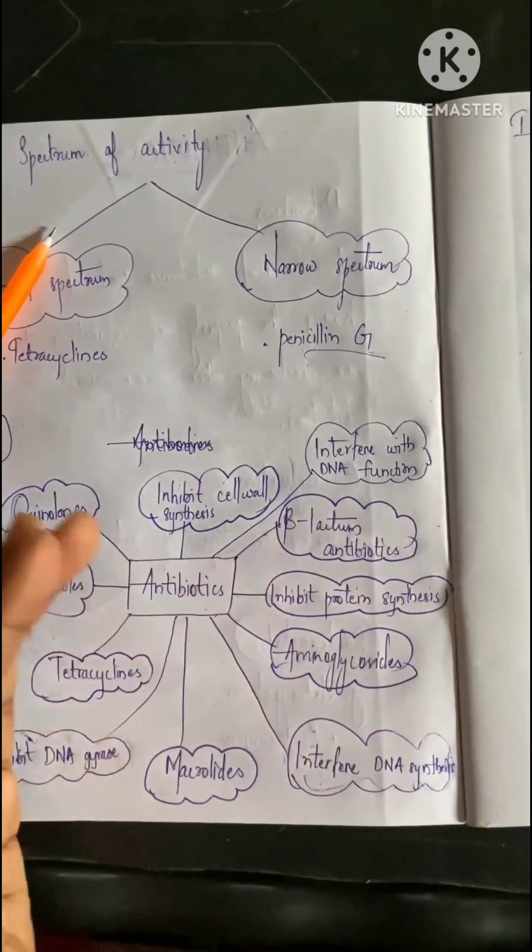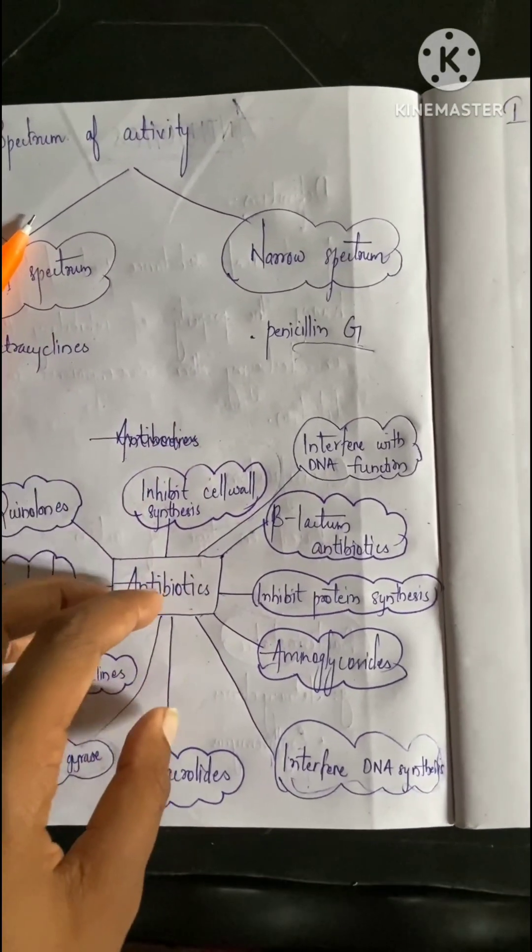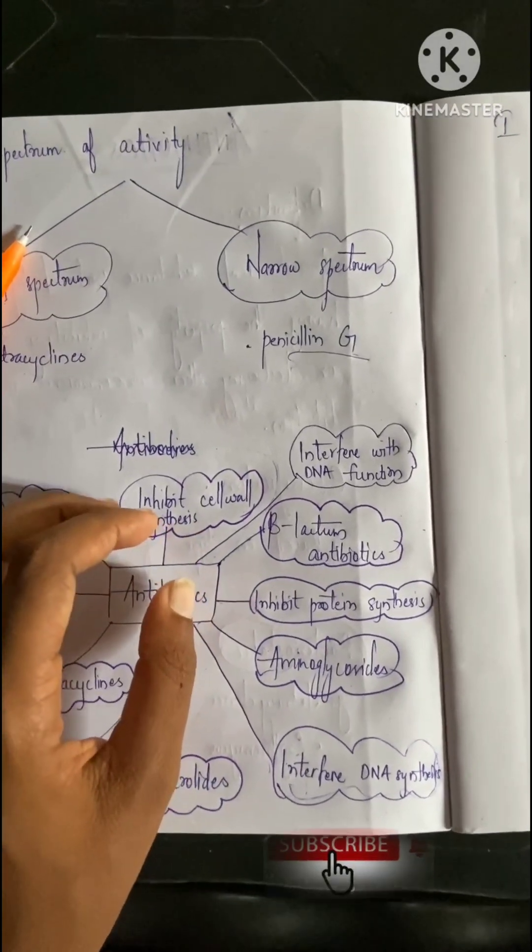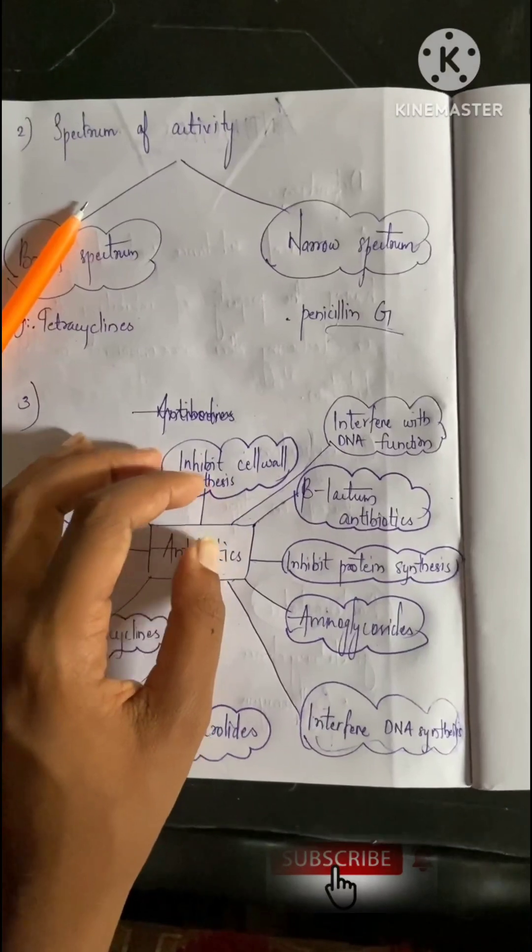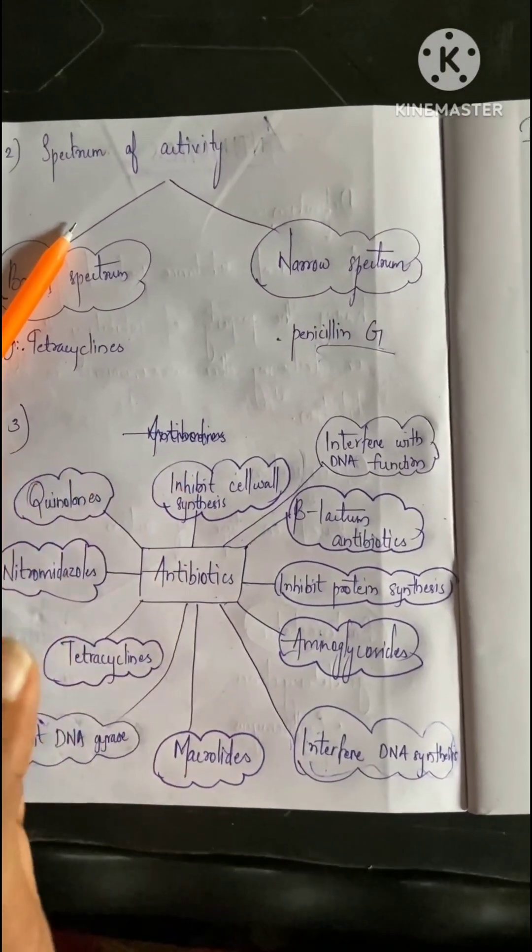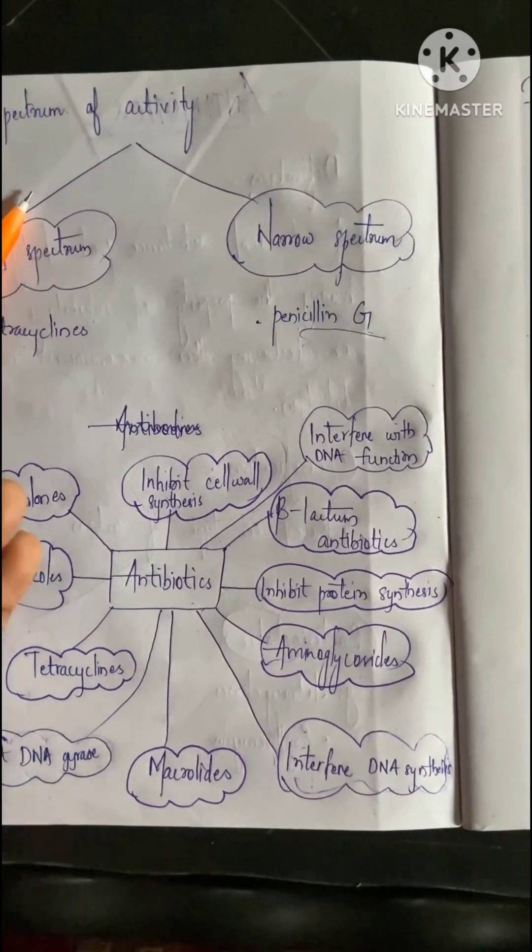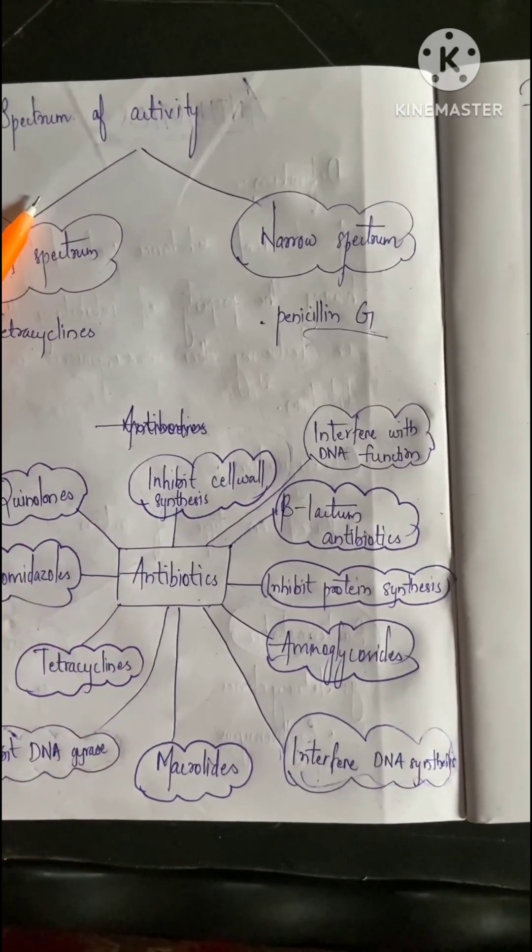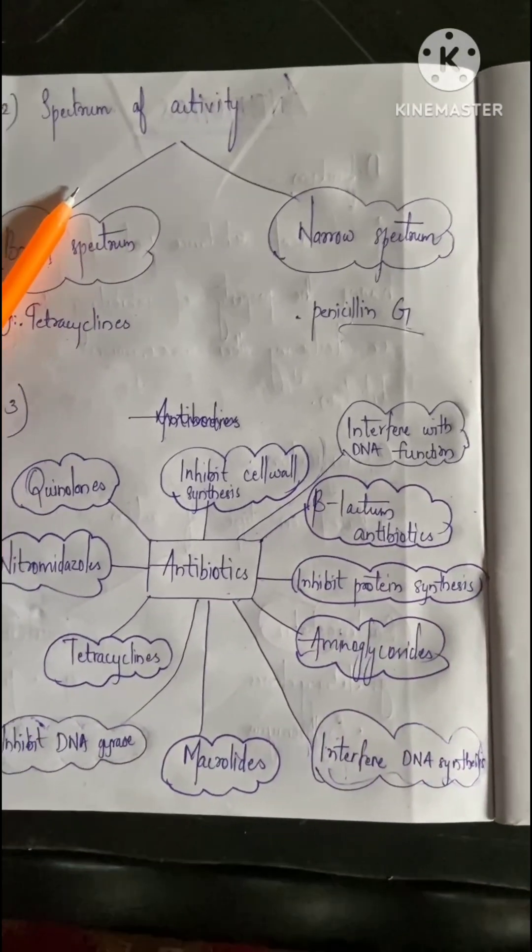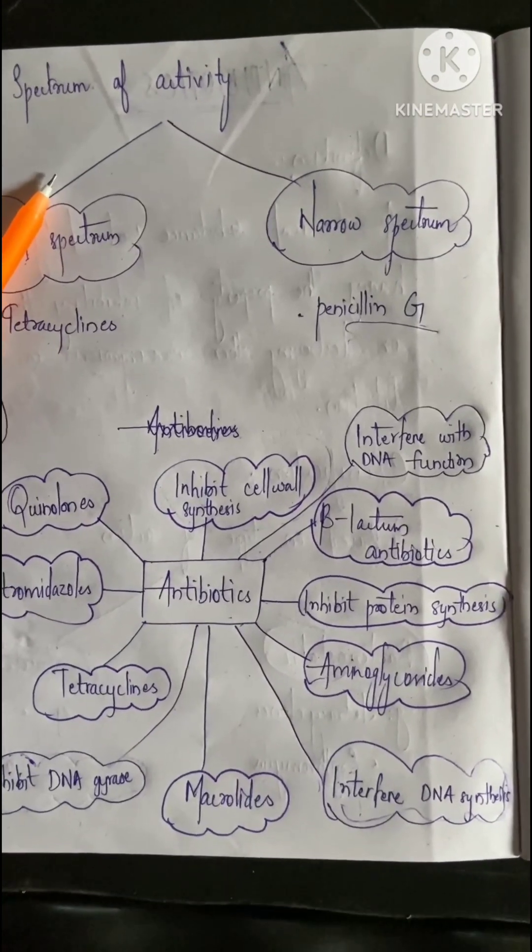Next is inhibit protein synthesis. When a microbe enters the body, it starts to grow. For growth, like every other organism, it needs protein. Microbes need protein synthesis through ribosomes. If we inhibit the ribosome, the microbe cannot synthesize protein. Examples of antibiotics inhibiting protein synthesis are tetracycline, erythromycin, and chloramphenicol.